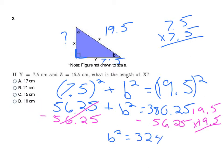Looking at the answers, they're all whole numbers, so this has to be a perfect square. I check whether 17 times 17, 21 times 21, 15 times 15, or 18 times 18 gives me 324. When I try 18 times 18, that gives me 324. So that's going to make D my final answer.